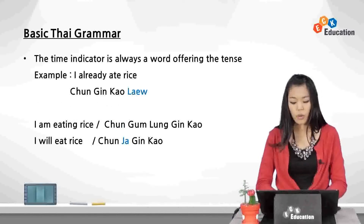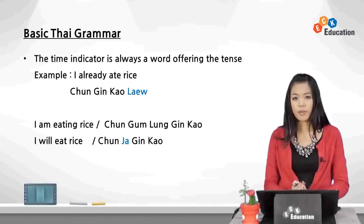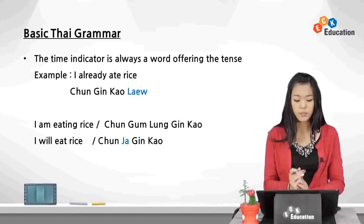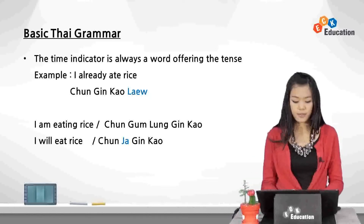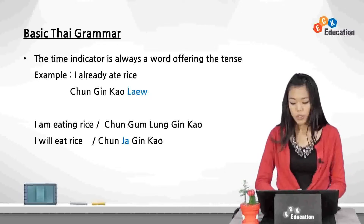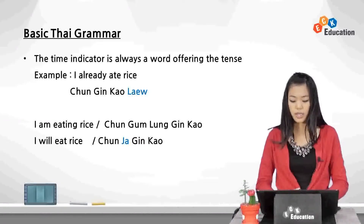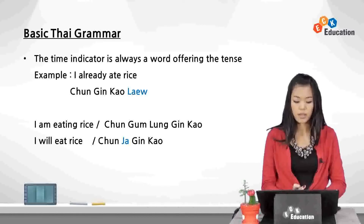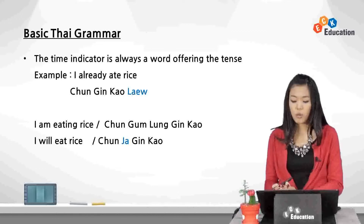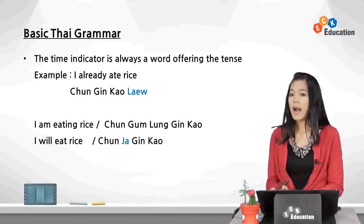The time indicator is always a word indicating tense. Unlike Korean or English where tense is shown by conjugating verbs, in Thai we put certain words into the sentence to show tense. For example, 'I already ate rice' — chan gin kao leo. The time indicator is leo, which means 'already.' Chan means 'I,' gin means 'to eat,' kao is a new word meaning 'rice,' and leo means 'already.' So the whole sentence means 'I already ate rice.'